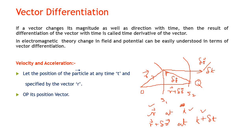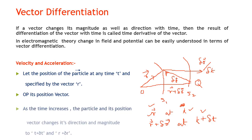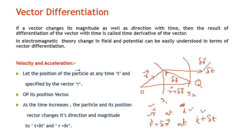As time increases, the particle's position vector changes its direction and magnitude. At time t the position vector is r, and when time changes to t plus delta t, the magnitude and direction also change, and the new position vector is represented as r plus delta r.